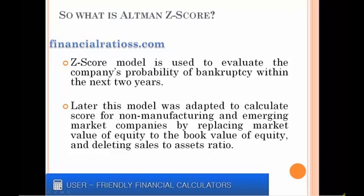First of all, it is a mathematical model used to evaluate the company's probability of bankruptcy within the next two years. This model was created by combining five different financial ratios, calculated by using the accounting data of those companies that had already gone bankrupt in the past. The model itself was developed in 1968, but is still one of the most widely used ones. Later this model was adapted to calculate score for non-manufacturing and emerging market companies by replacing market value of equity to the book value of equity and deleting sales to assets ratio.